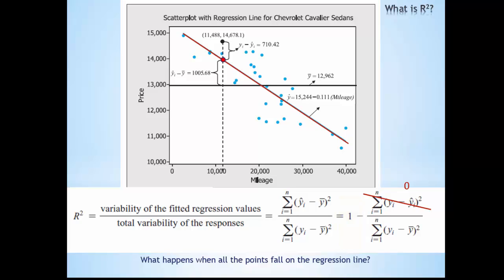In general, when our observed points are very close to the predicted regression line compared to the overall mean, we are going to get an R-squared close to 1.